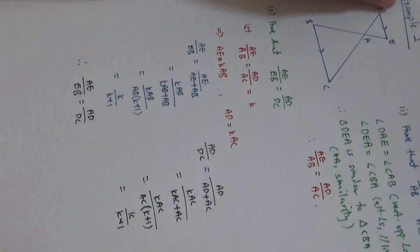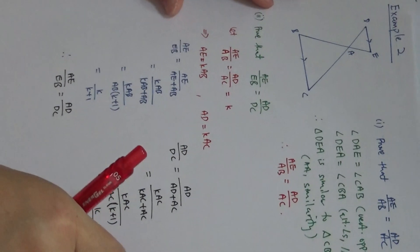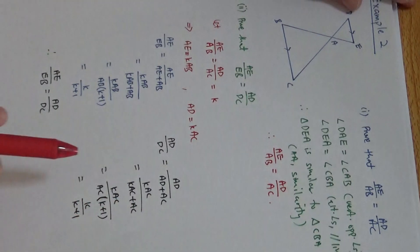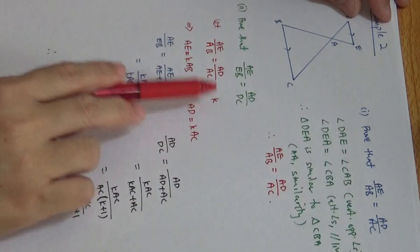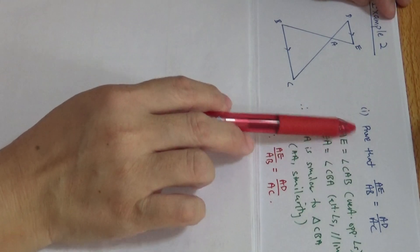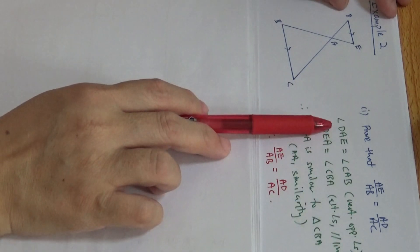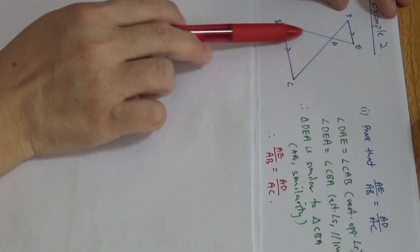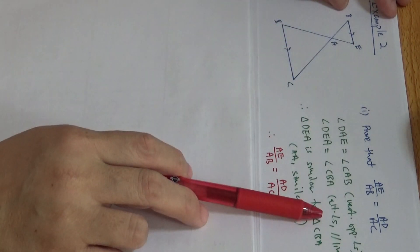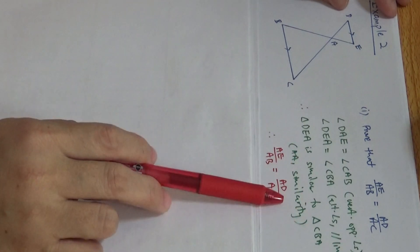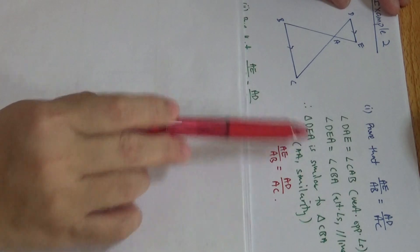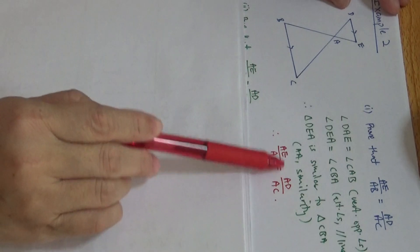Now we are going on to Example 2. For Example 2, the question asks in terms of fractions and ratios, so most likely we are going to use similar triangles. First part: prove that AE over AB equals AD over AC. We know that angles DAE and CAB are vertically opposite angles, therefore they are equal. Angle DEA equals angle CBA — alternate angles, parallel lines. So these two triangles are similar because of AA similarity. Therefore, since the sides are proportional, AE over AB equals AD over AC.